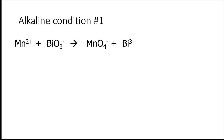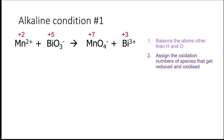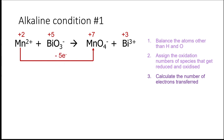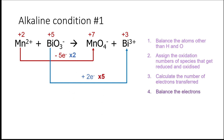Now let's take a look at an example of a redox reaction in alkaline condition. I'm going to use the same species as in our first example. The first step is to balance the atoms that are not hydrogen and oxygen — in this case, manganese and bismuth are both balanced already. The second step is to assign the oxidation states of the species that undergo oxidation and reduction. The third step is to calculate the number of electrons being transferred: manganese loses 5 electrons and bismuth gains 2 electrons. The fourth step is to make sure the electrons lost equal the electrons gained — we cross-multiply the two numbers, giving manganese a coefficient of 2 and bismuth a coefficient of 5.